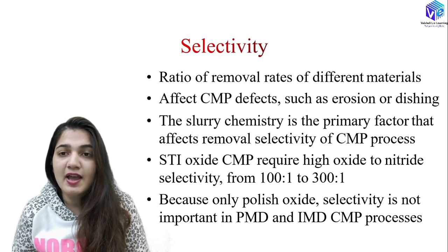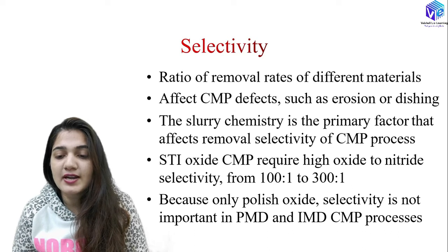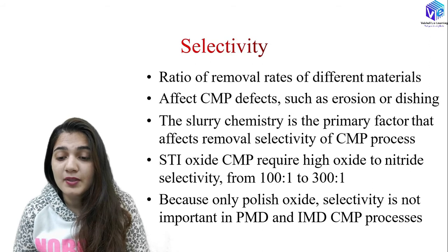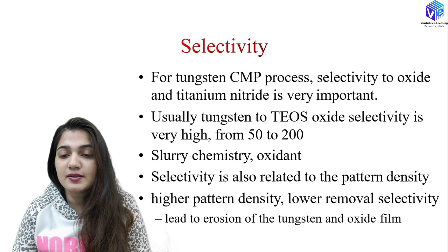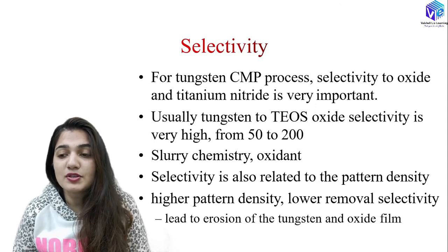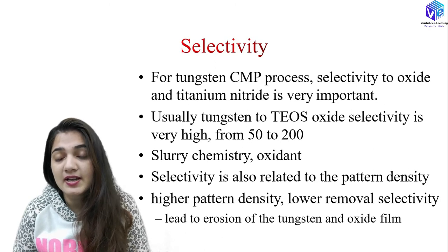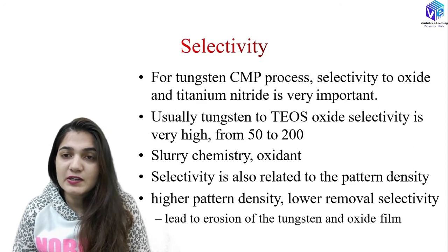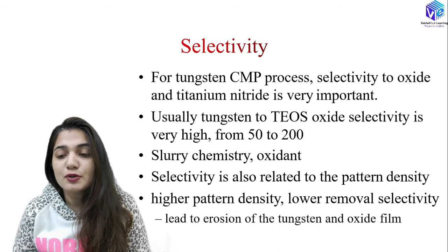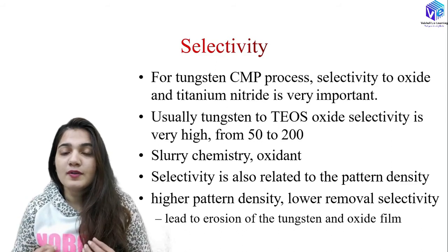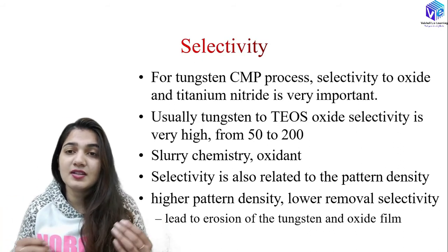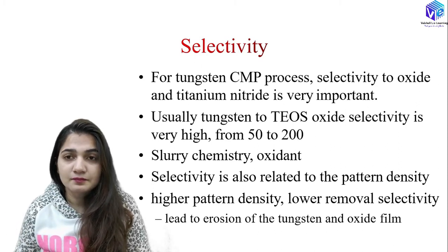Short-range isolation oxide CMP requires high oxide-to-nitride selectivity — as high as 100:1 to 300:1 — because only polishing oxide selectivity is important in PMD and IMD CMP processes. For tungsten CMP, selectivity to oxide and titanium nitride is also very important. Tungsten-to-TEOS oxide selectivity is very high, around 50 to 200. If tungsten removes more than TEOS or vice versa, we get roughness instead of a planar structure.